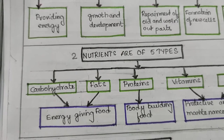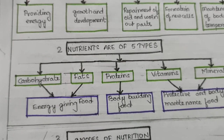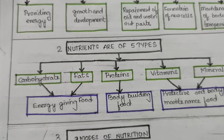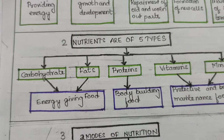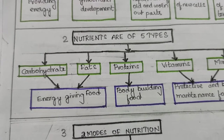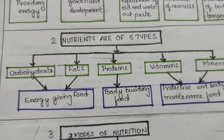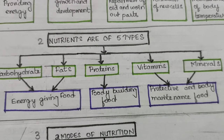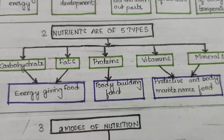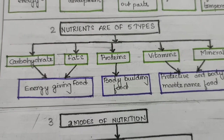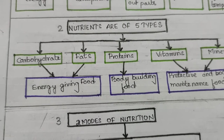From food we get different nutrients required by our body. These are classified into five types: carbohydrates, fats, proteins, vitamins, and minerals — along with roughage and water. Carbohydrates and fats are energy-giving foods; protein is a body-building food; and vitamins and minerals are protective and body-maintenance foods.